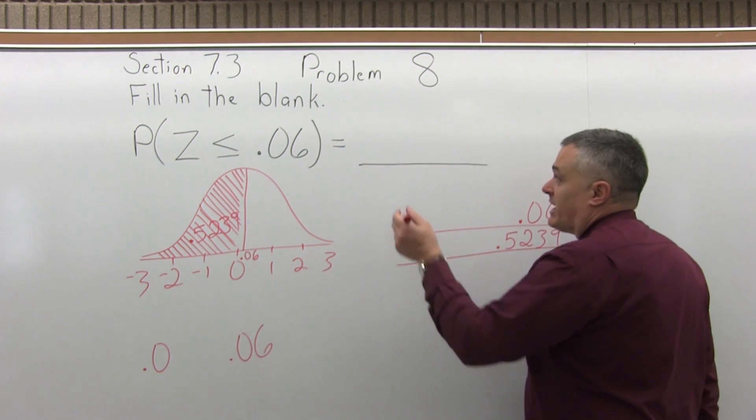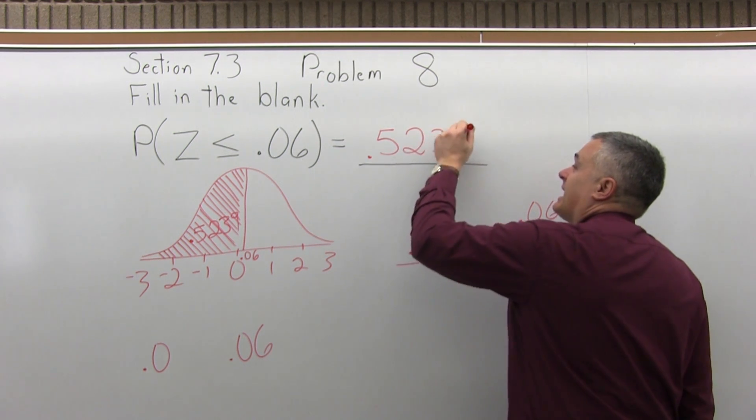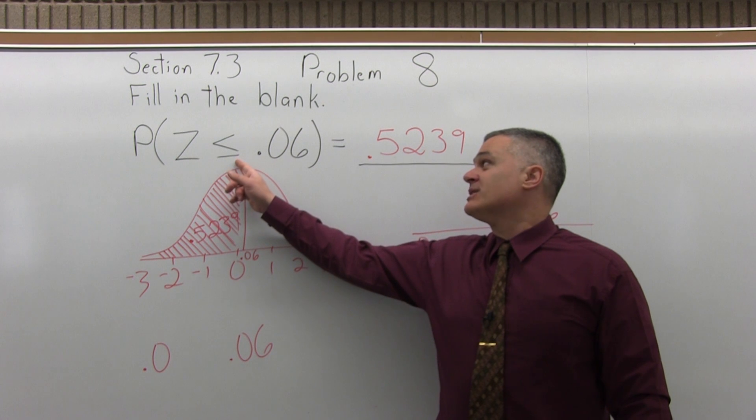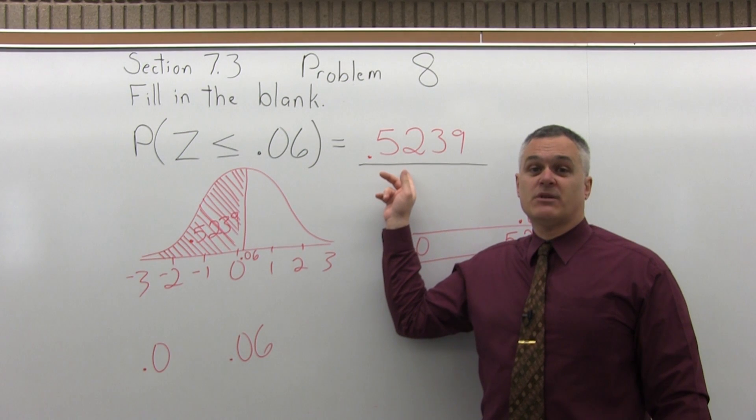So when we fill in the blank, it is 0.5239. So the probability that Z is less than or equal to 0.06 is approximately a 52% probability.